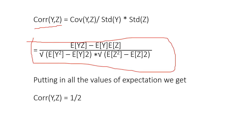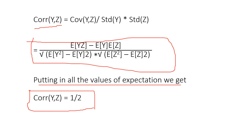Plugging all values into the correlation formula, we get the final answer: the correlation between Y and Z equals 1/2.